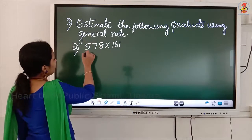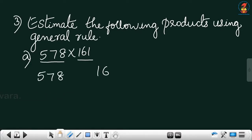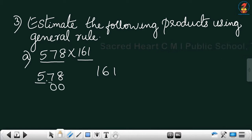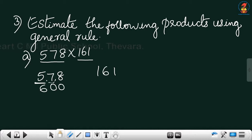Here both numbers are 3-digit numbers, so the greatest place is 100. We will round off both to 100. For 161, which digit is in the hundreds place? 5 is in the hundreds place. Replace the right side digits with 00. The immediate right digit is 7, which is greater than 5, so we add 1. 5 plus 1 gives 600.